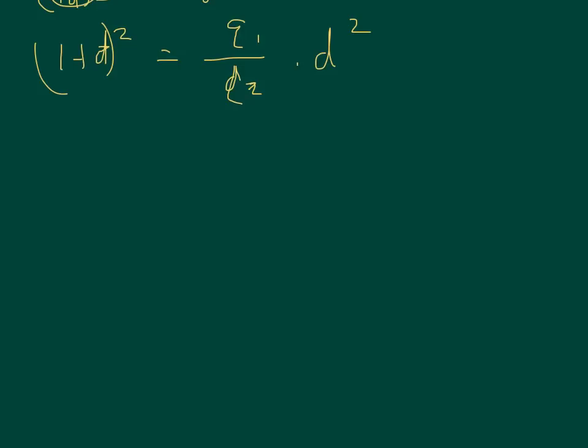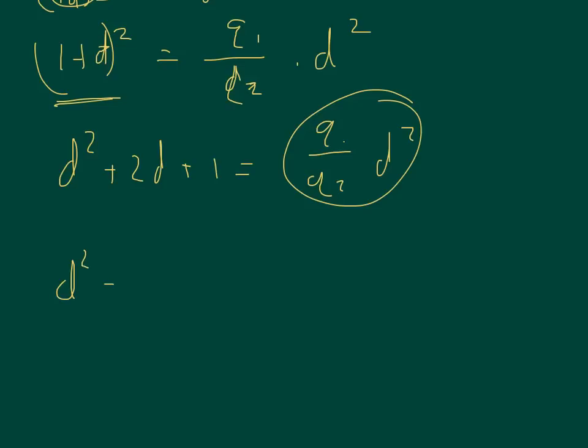Next I'm going to expand this out. When you expand it out, you get D squared plus 2D plus 1 and that's going to equal Q1 over Q2 times D squared. Then I'm going to subtract this whole term to the other side. You'll get D squared minus Q1 over Q2 times D squared plus 2D plus 1 equals zero.